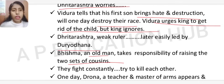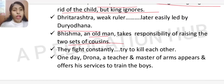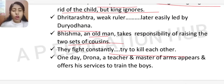As Duryodhana grew up, the two sets of cousins — the Kauravas and the Pandavas — fought constantly and tried to kill each other.